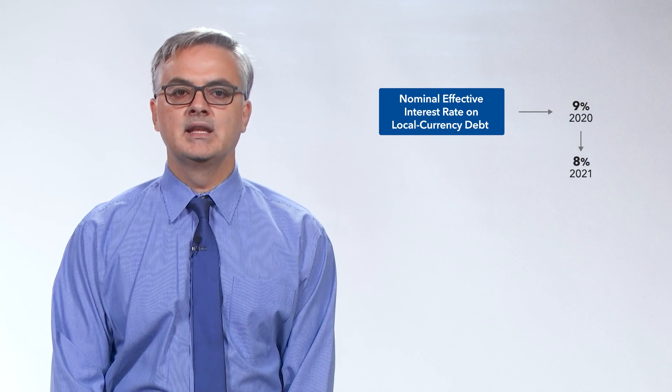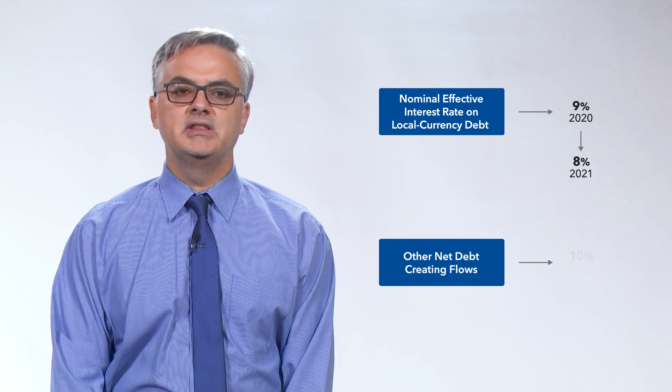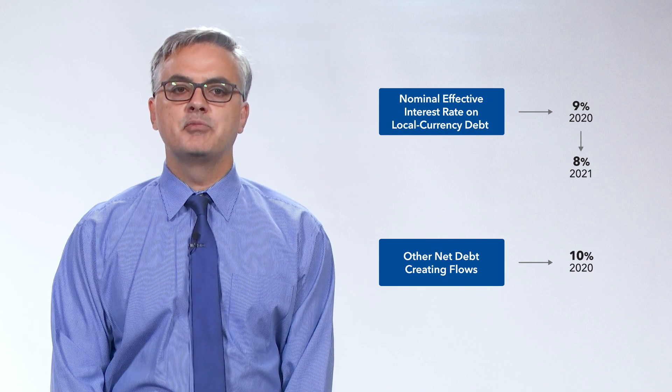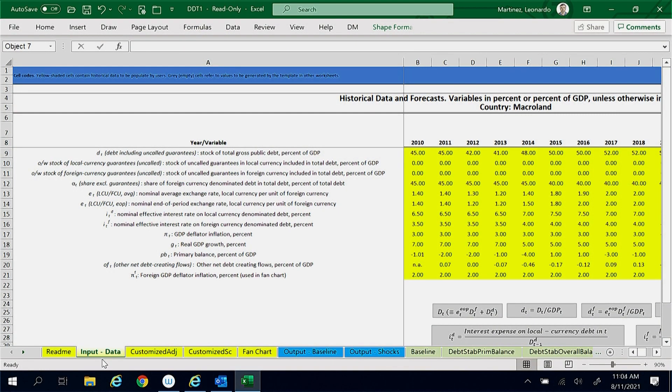The nominal effective interest rate on local currency debt is projected to be 9% in 2020 and to decrease to 8% in 2021. Other net debt-creating flows are projected to be 10% of GDP in 2020. All other projections remain unchanged and are reflected in the input data worksheet of the DDT1 file.